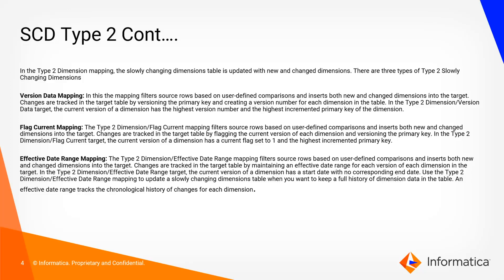In effective date range mapping, changes are tracked in the target table by maintaining an effective date range of each version of each dimension. The current version of a dimension has a start date with no corresponding end date. An effective date range tracks the chronological history of changes for each dimension.